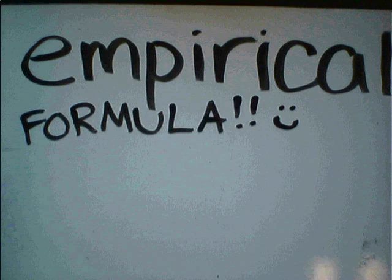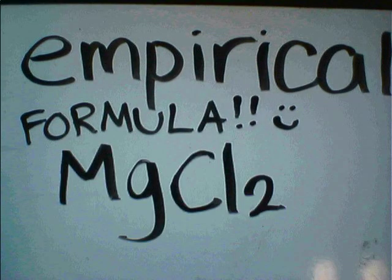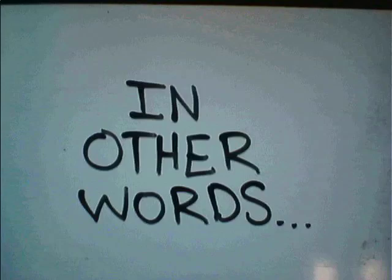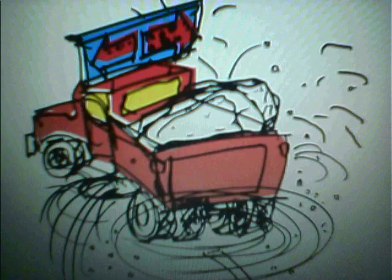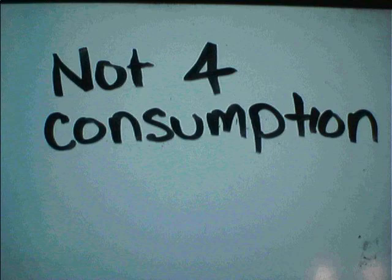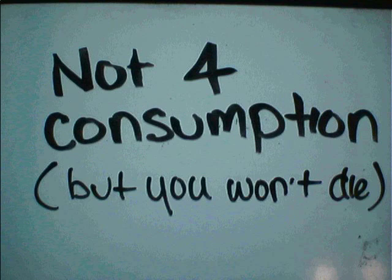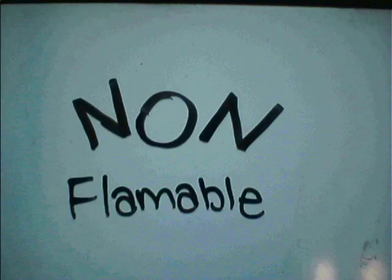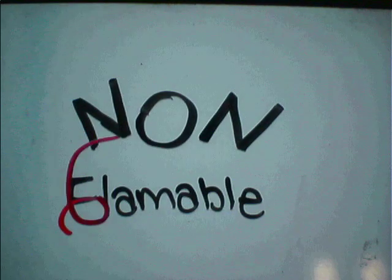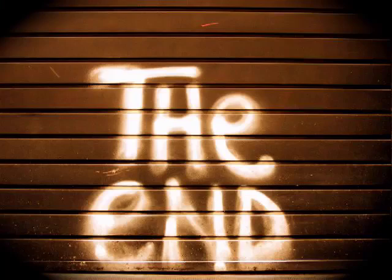We can shorten magnesium chloride by converting it to its empirical formula. What does this mean? It's the ratio of the atoms in the compound — for every one magnesium, there are two chlorines. Interestingly, magnesium chloride is used in the process of making tofu, soy milk, and as an anti-ice agent. It isn't for consumption, but it won't kill you if you get the munchies. It's also non-flammable, which is typically spelled with two N's.